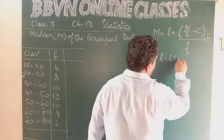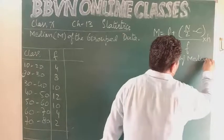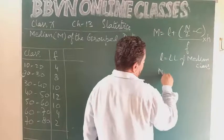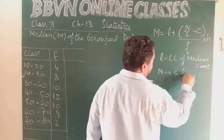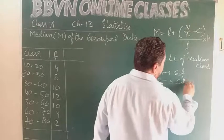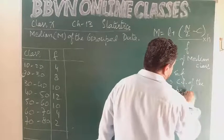L means the lower limit of median class. Capital N stands for sum of the frequencies. Small c stands for cumulative frequency of the preceding class.